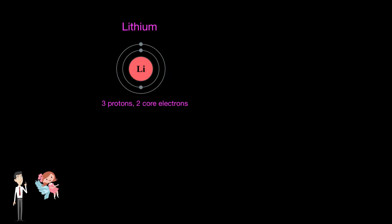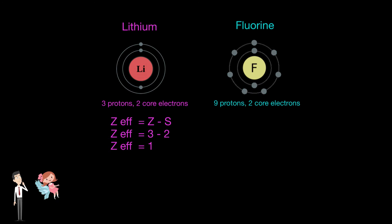Now let's do two examples with the assumption that S is the number of inner core electrons. Starting off with lithium: elemental lithium has three protons and two inner core electrons, as we can tell by the board diagram. So Z is three and S is two. Three minus two equals one, and therefore the effective nuclear charge of lithium is approximately one. Now fluorine: elemental fluorine has nine protons and two core electrons. Nine minus two equals seven, and therefore the effective nuclear charge of fluorine is approximately seven.